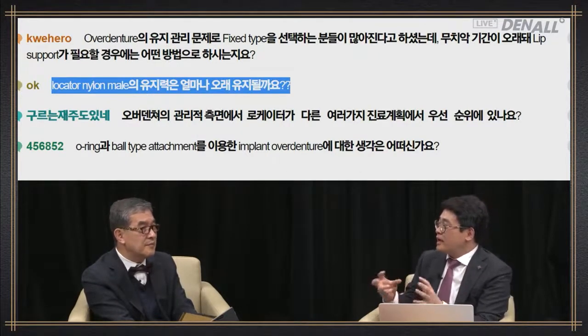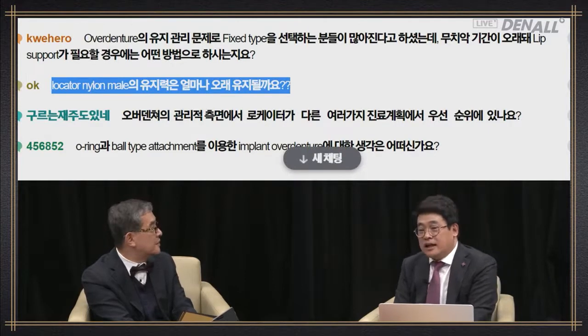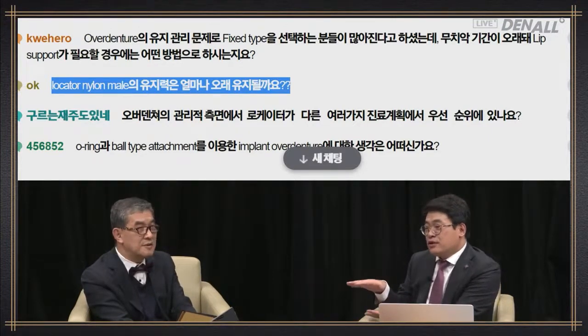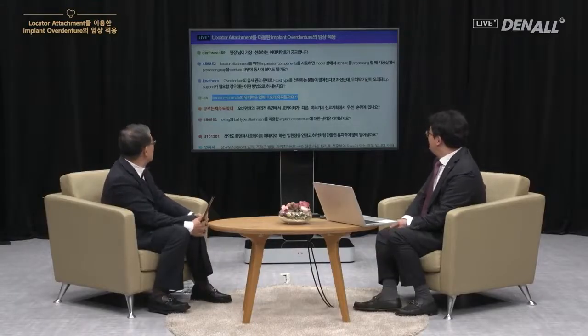You need to have an established maintenance protocol and inform the patient of the cost ahead, rather than asking for additional money after one or two years. From the get-go, tell the patient how much the overdenture costs and what maintenance will be required. If you ask for repair costs a year later without prior discussion, patients will complain. Inform the patient of what will be done and what is necessary over the course of the year — every six months going forward. This will help you avoid confrontation with patients.